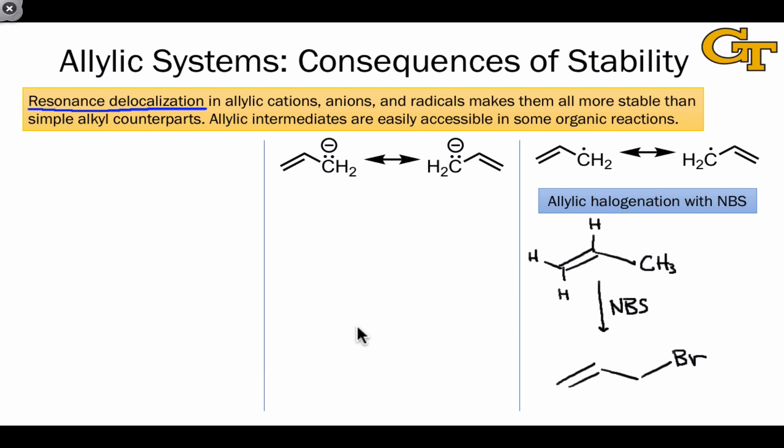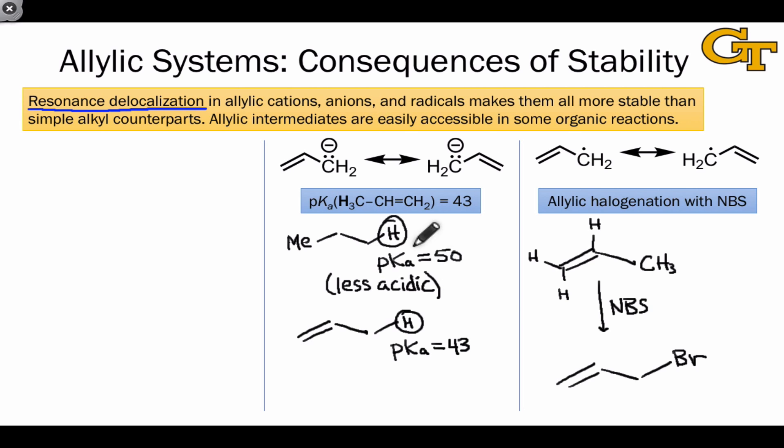In thinking about the allyl anion, one thing to notice is that the pKa of propene at this methyl carbon is significantly lower than we would expect for a plain vanilla alkane. Something like propane at one of its terminal hydrogens has a pKa that's considerably higher, something like 50. This makes propane considerably less acidic than propene. The ultimate reason for this is that deprotonation of propene generates allyl anion. Because its conjugate base is more stable than the conjugate base of propane, propene is more easily deprotonated and is more acidic.